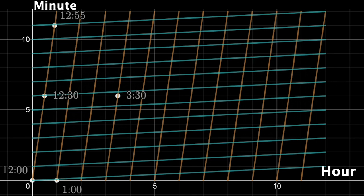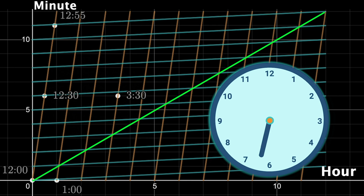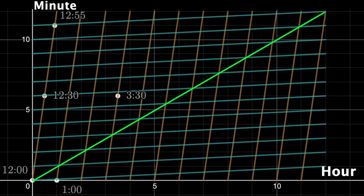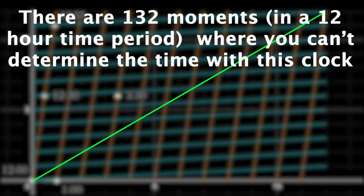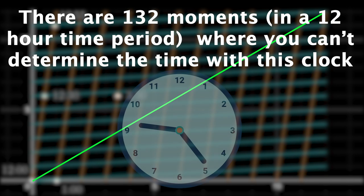The only thing to realize is that of these 144 intersections, 12 of them lie on the line y equals x, when the hour and minute hand are facing the same way. So we definitely know those specific times without knowing which hand is the hour and which is the minute. But the 132 other intersections tell us there are 132 moments in a 12 hour period where you could not determine the time on this clock.